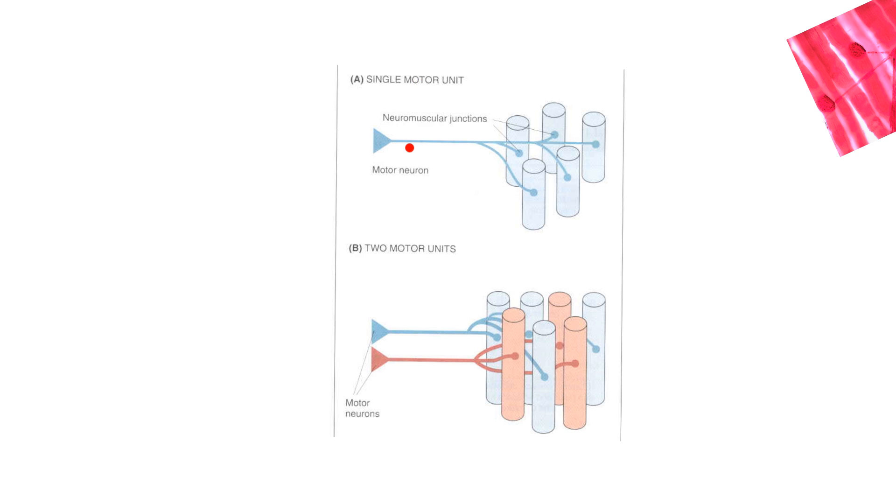If it was like one large axon here and only one fiber, you have very fine control. If you have five, you have less control, less finesse. If you had one motor neuron talking to 100 muscle fibers, then you have very crude movement because every little action potential comes down here that would talk to a lot of muscle.